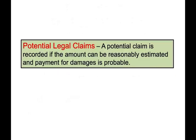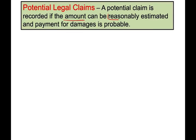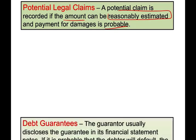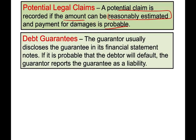Examples of contingent liabilities include legal claims where an amount can be reasonably estimated and it's probable. Debt guarantees occur when you guarantee the debt of others — one company guarantees the debt of another. The minimum requirement is disclosure. If it's probable the guaranteed party will default, you must record a liability. Notably, Enron guaranteed the debt of their subsidiaries but never disclosed it, effectively hiding the debt.